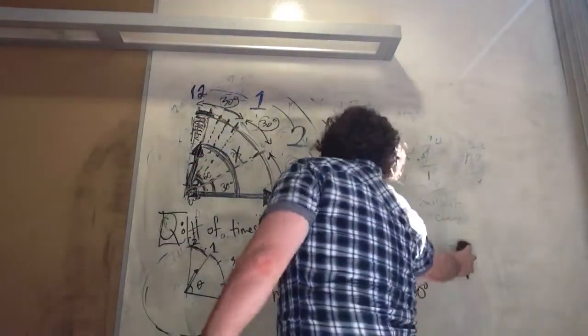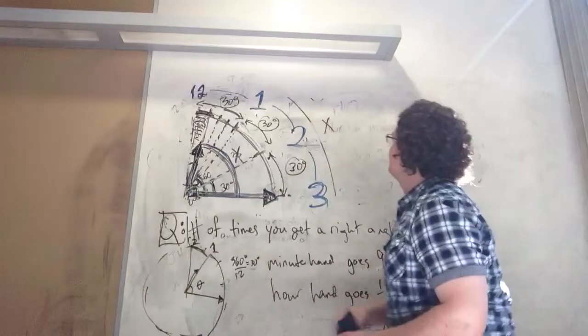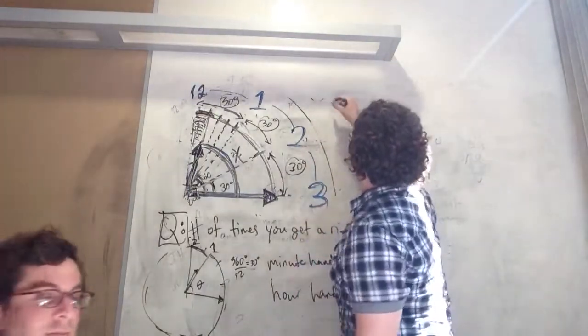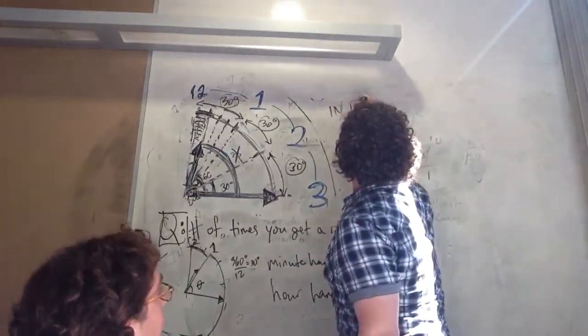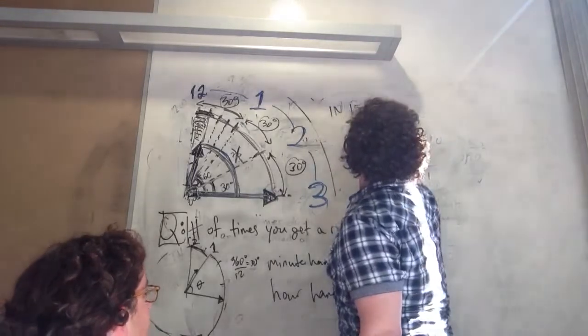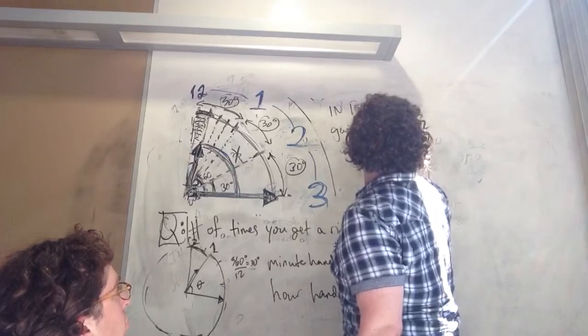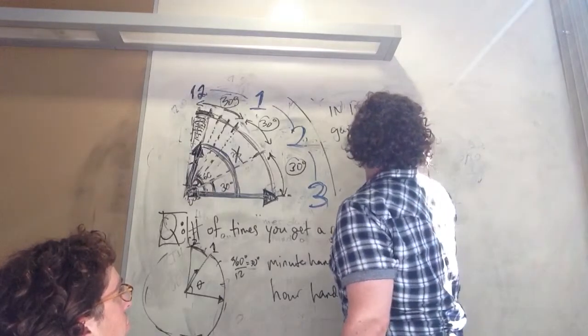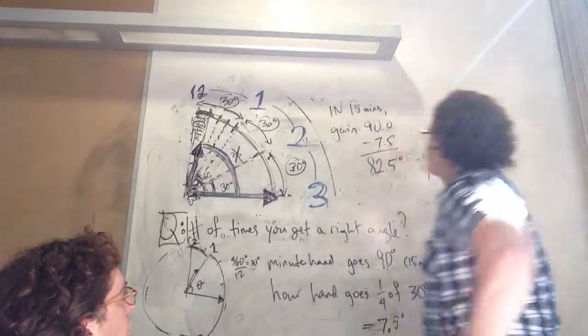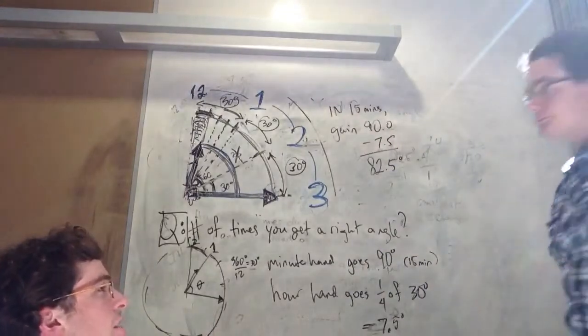It's 90 minus 7.5. So in 15 minutes, we gain 90 minus 7.5, which is 82.5 degrees. So how does that help me?